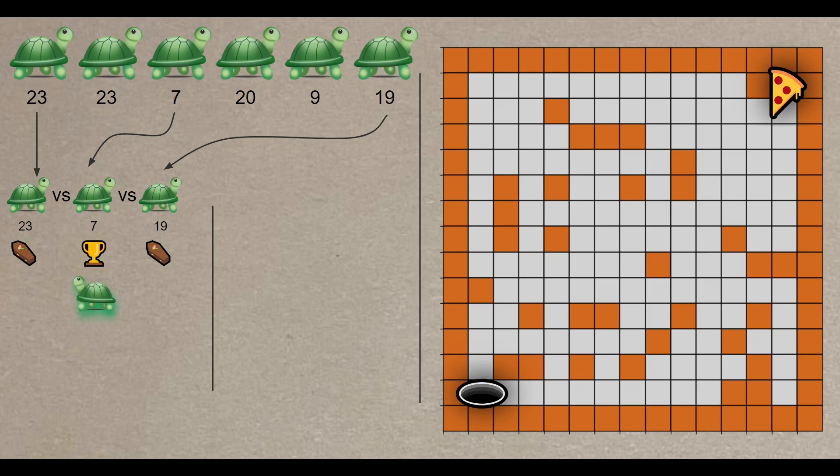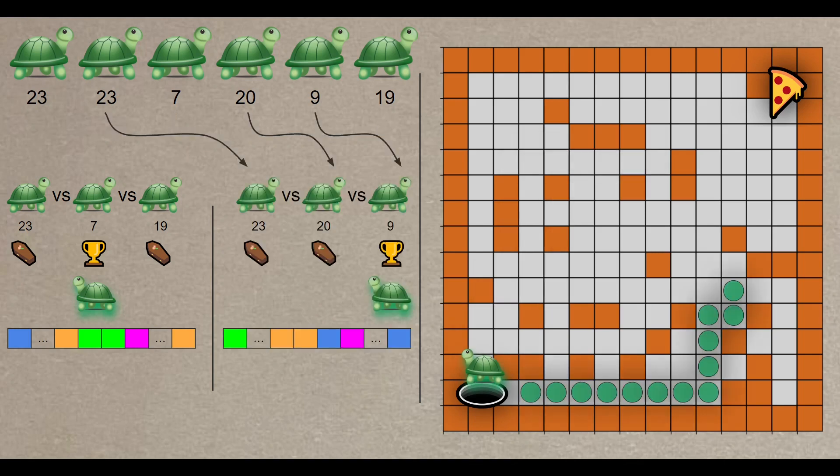Note that the size of the subgroup is a parameter that we need to experiment with. So, we have this turtle here as a winner because it has the lowest distance among them, and that is its genome. And here is another turtle from the second group.